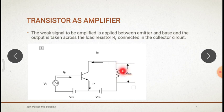During the negative half cycle, the forward bias across the emitter-base junction is decreased. Therefore, the collector current decreases. This results in a decrease in the output voltage in the opposite direction, and hence an amplified output is obtained across the load.